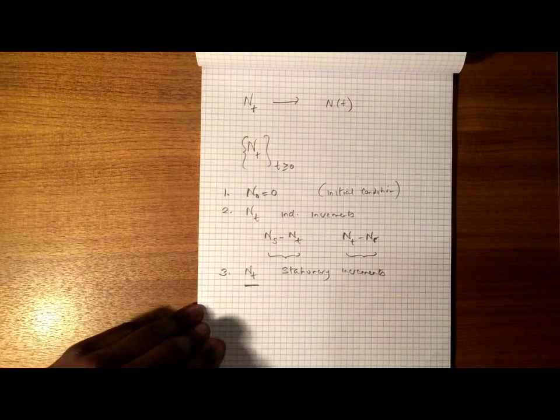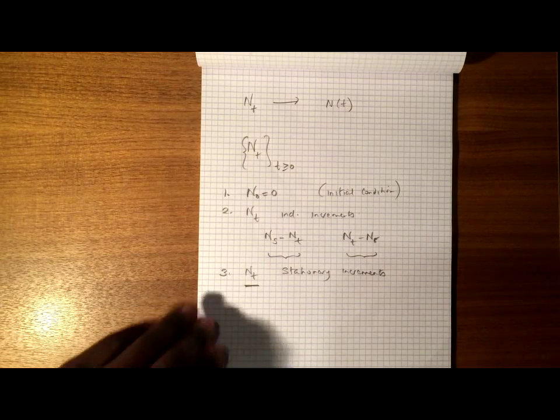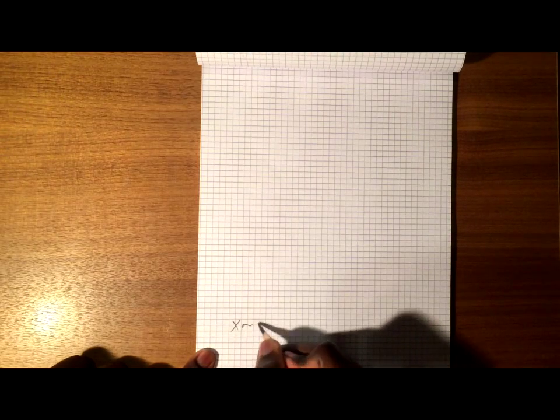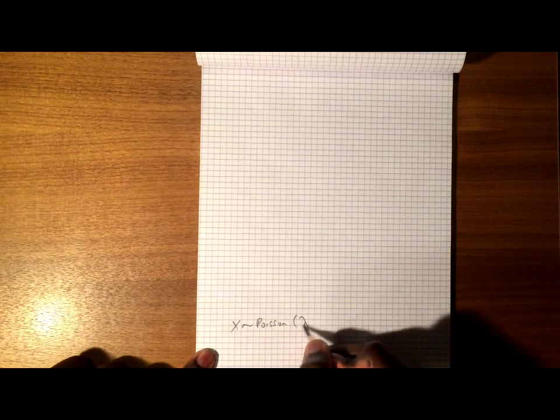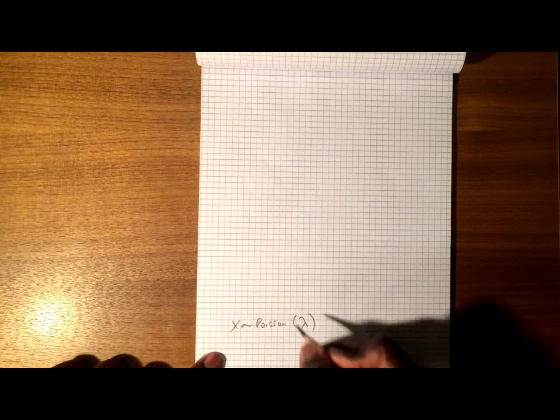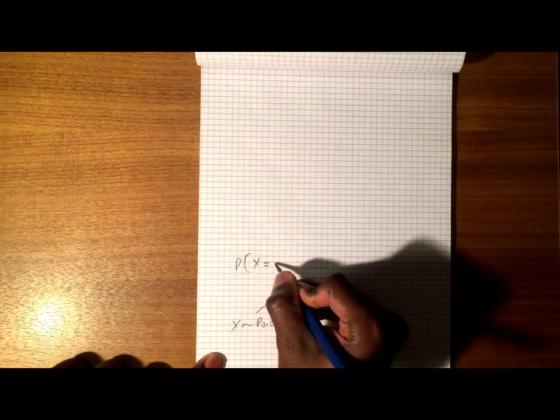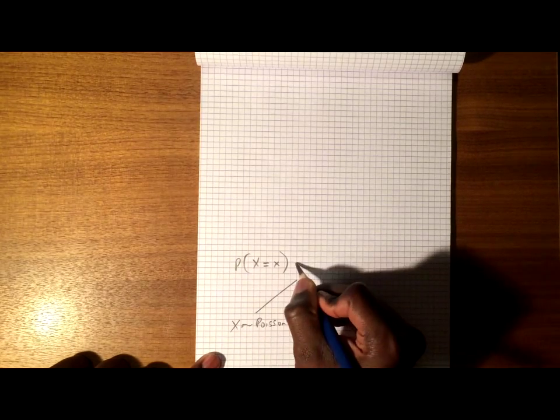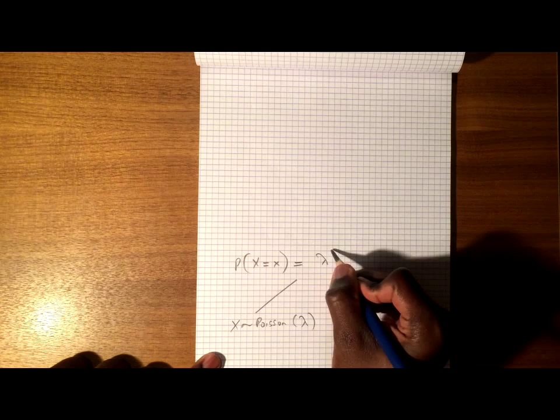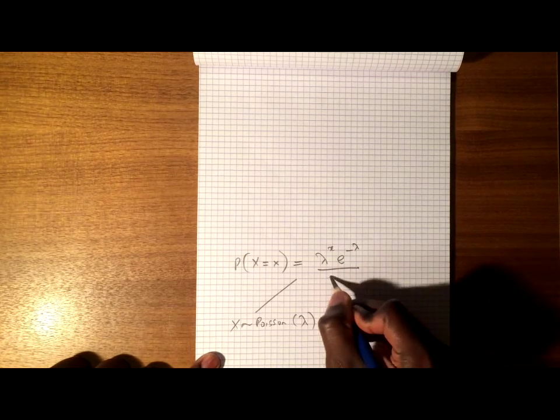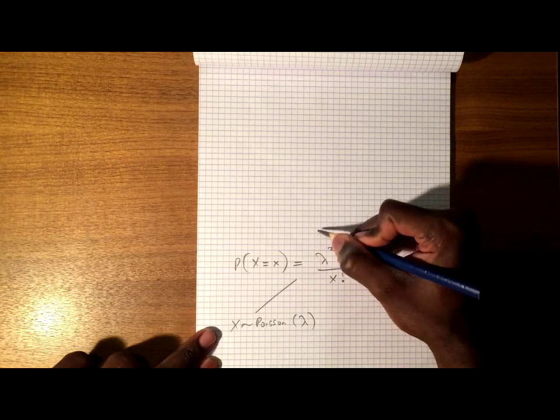So from our statistical studies, we know that if a random variable x is Poisson distributed with parameter lambda, we can write the probability that x takes some value little x to be equal to lambda to the x e to the minus lambda over x factorial.